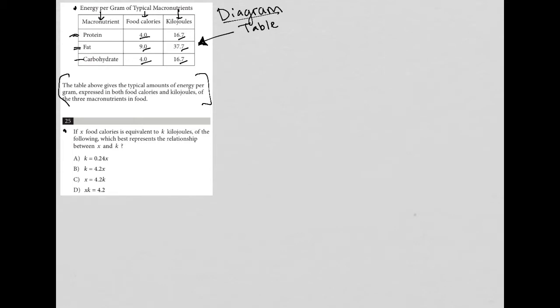The question says if X food calories is equivalent to K kilojoules, which best represents the relationship between X and K? We have protein, fat, and carb. Instead of saying food calories, that's X. So for X we get 4, 9, and 4. Instead of kilojoules, I'm going to call that K. So we get 16.7, 37.7, and 16.7. Obviously we could have done this without rewriting the entire table.